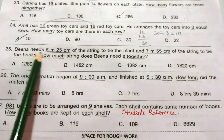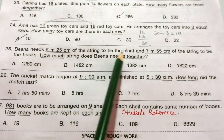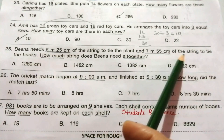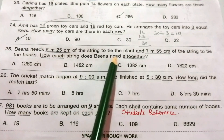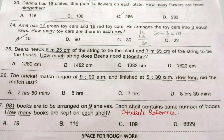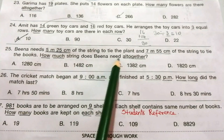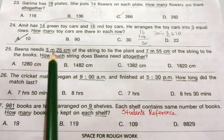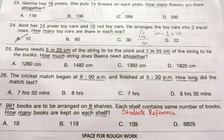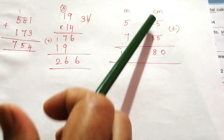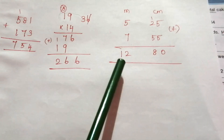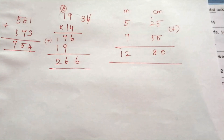Question 25: Beena needs 5 meters 25 centimeters of string to tie a plant and 7 meters 55 centimeters to tie books. How much string does she need altogether? We add these two values: 5m 25cm plus 7m 55cm equals 12 meters 80 centimeters, or 1280 centimeters. Our answer is A: 1280 centimeters.